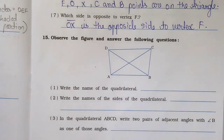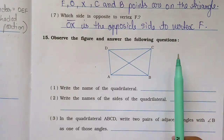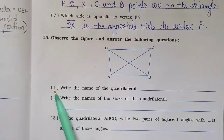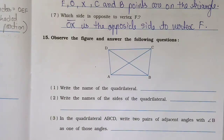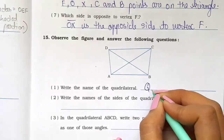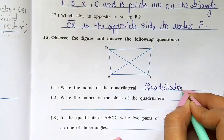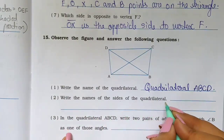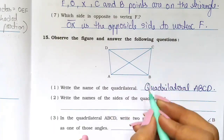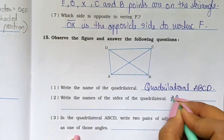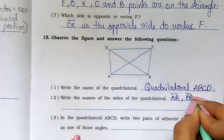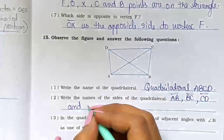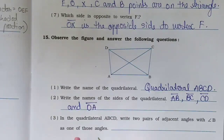Now question number 15: Observe the figure and answer the following questions. Here we have quadrilateral ABCD. First question: Write the name of the quadrilateral — the name is ABCD. Number 2: Write the names of the sides — line segment AB, line segment BC, line segment CD, and line segment DA.